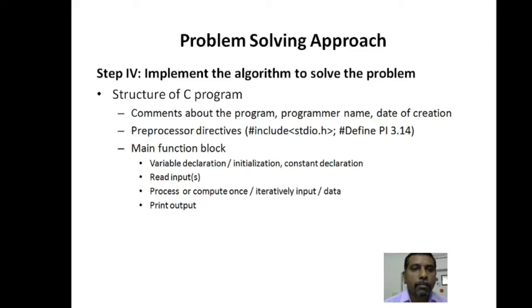Then starts your main function of your C program. Your main function block normally includes the following items: you have to declare the variable and sometimes you will initialize also, and sometimes you want to use constants that you have to declare. Then you will acquire the data or read the input, process the data - maybe once or sometimes repeatedly you will process the data - and then print the output. This is what your main function block contains. So this explains the structure of C program. Make sure that whenever you write a C program, all these items have to be included.